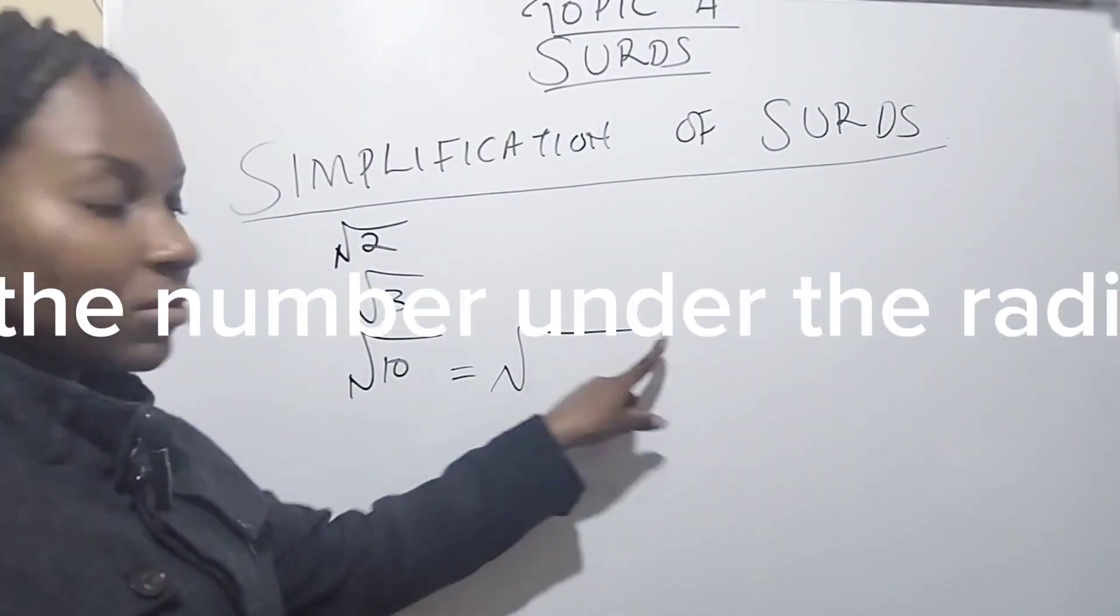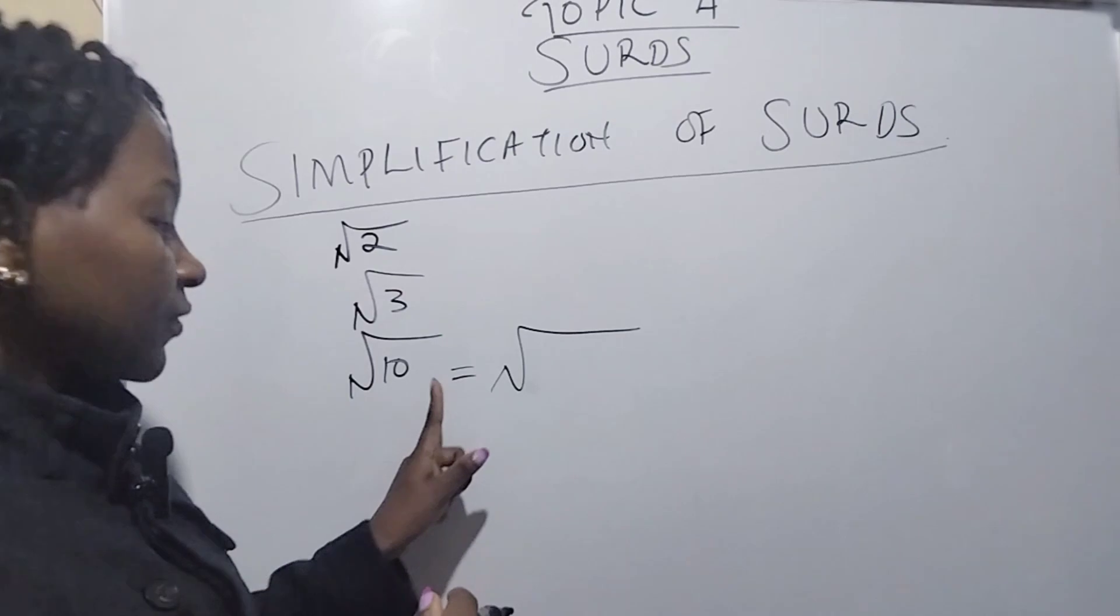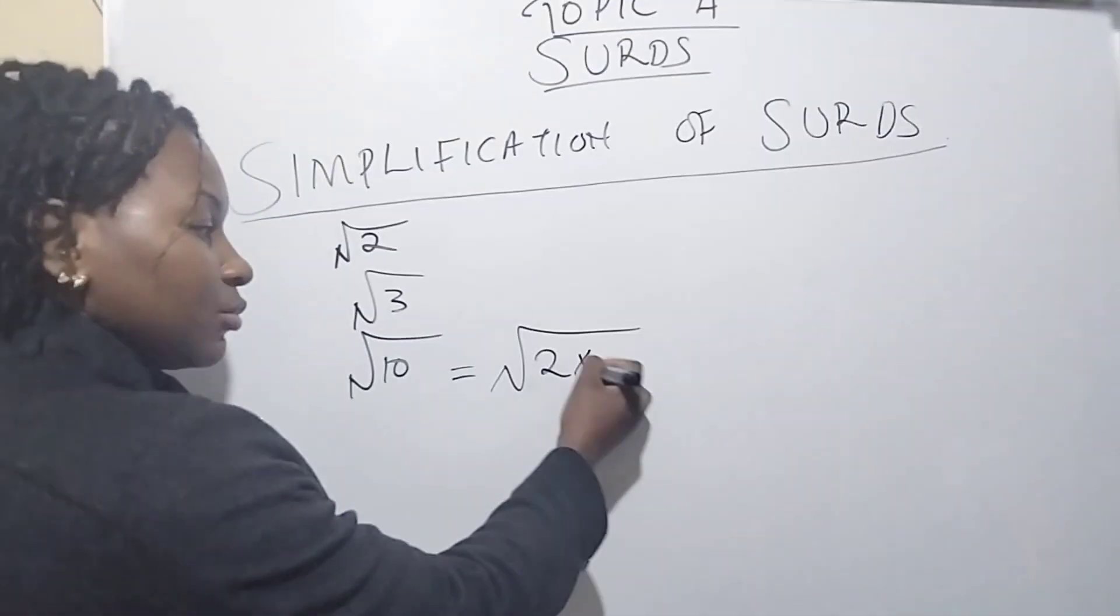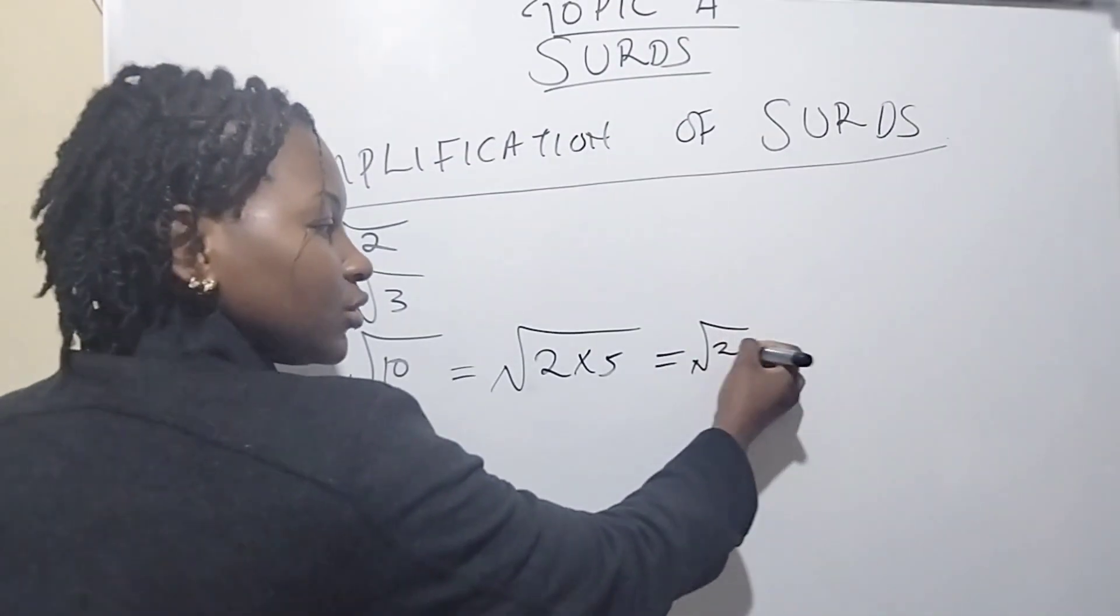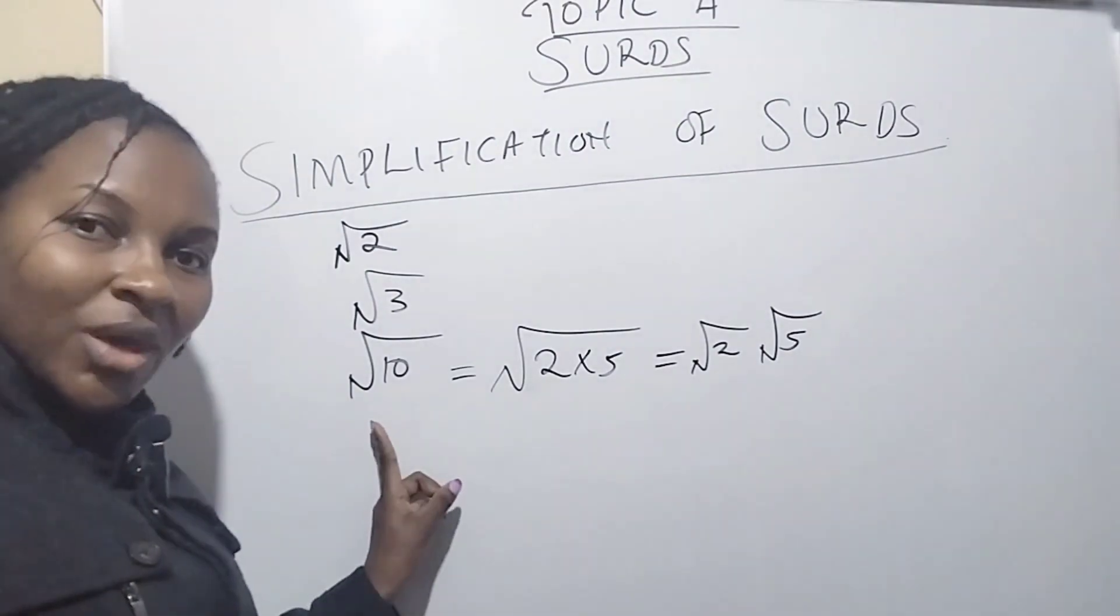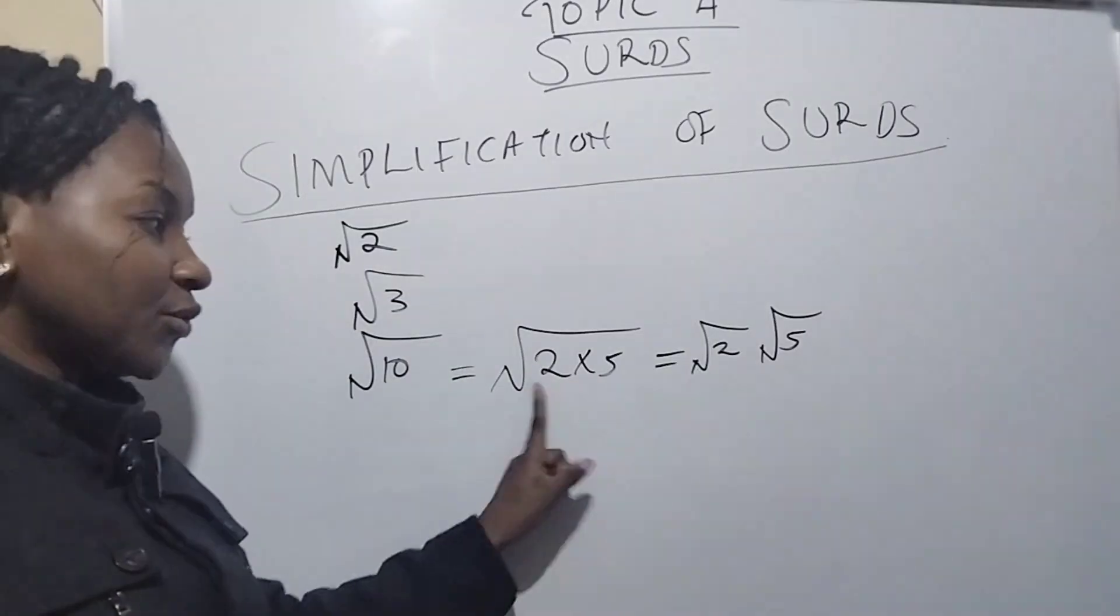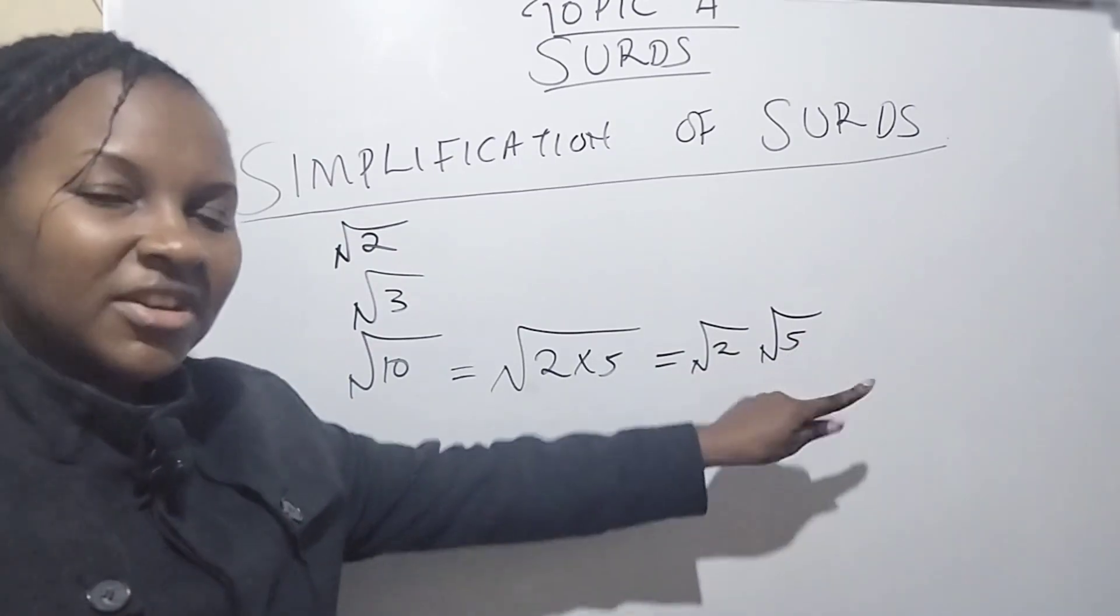We have the radical, the square root sign, with 10. The factors of 10 are 2 multiplied by 5, so square root of 10 is the same as square root of 2 times 5, which is root 2 root 5 in the simplest form.